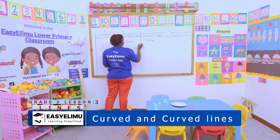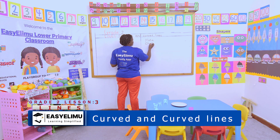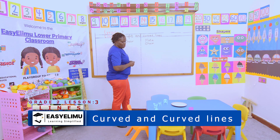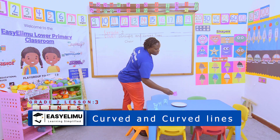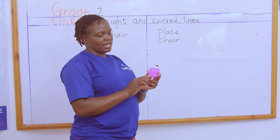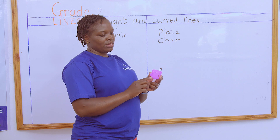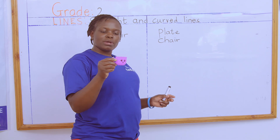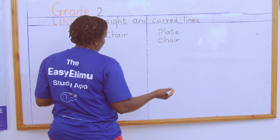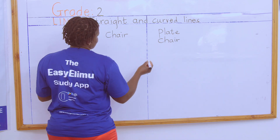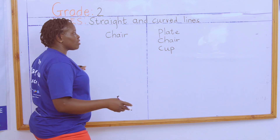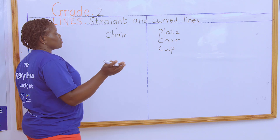It has straight lines and again it has curved lines. What about the cap? Look at this cap — look at the mouth, look at the handle. What can you say about this cap? The cap has curved lines.